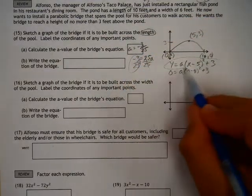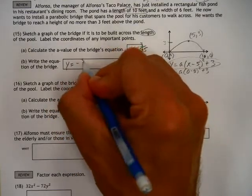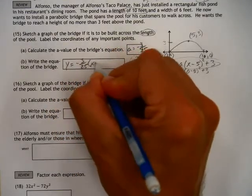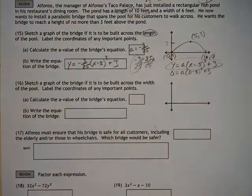The equation, as I said before, is basically that. But, now that we know the A value, I can write that in. Negative 3 over 25, X minus 5 quantity squared plus 3.